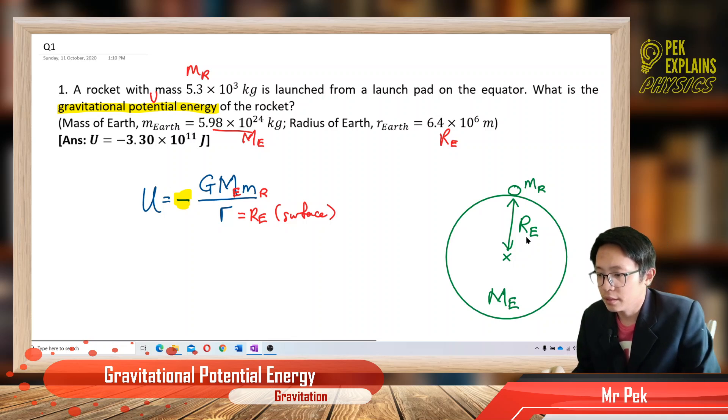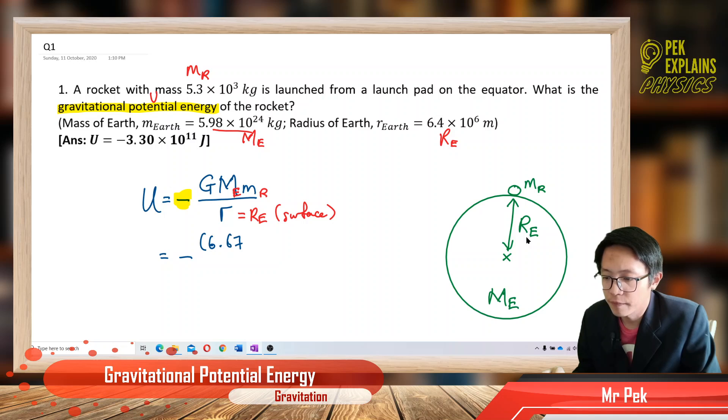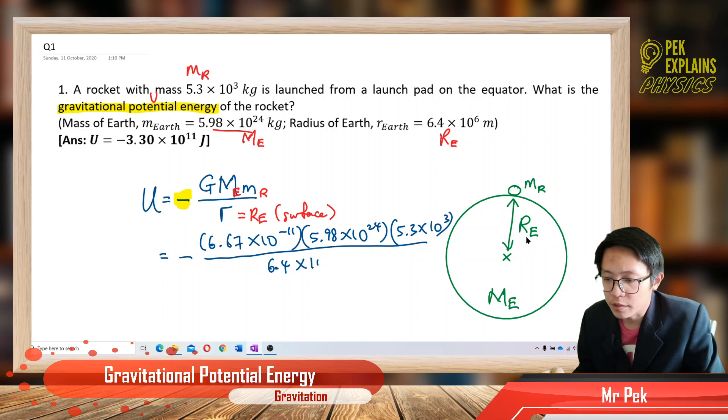Alright, so let's substitute all the values and we should get the answer. This is the G, mass of Earth, and the mass of rocket, divided by the radius of Earth, which is 6.4 times 10^6.